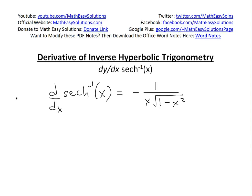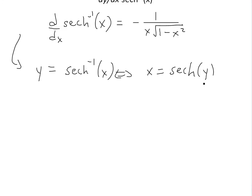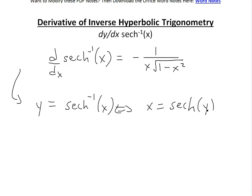As always, the beginning of the proof for these types of functions is to first let y equal the inverse hyperbolic secant of x. With inverse functions, this is the same as writing x equals the regular hyperbolic secant of y — we switch x and y, making it easier to work with. So now we have to solve for y.